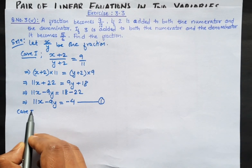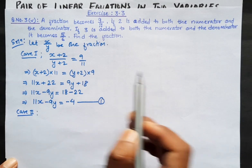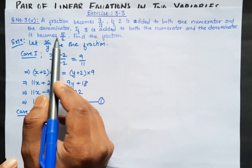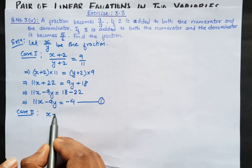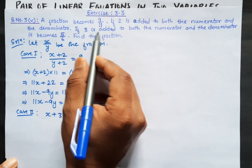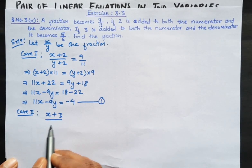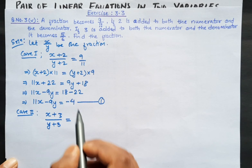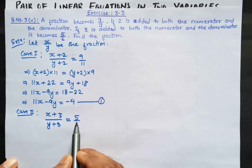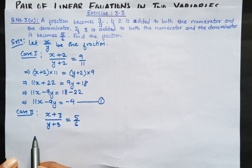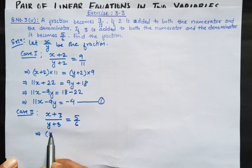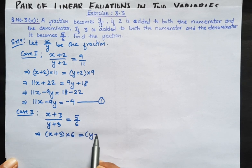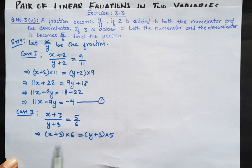Now similarly, Case 2: if 3 is added to both the numerator and denominator, it becomes 5 by 6. So if 3 is added to both numerator and denominator, our fraction becomes 5 by 6. We cross multiply the same way to form the second equation: x plus 3 into 6 equals y plus 3 into 5.